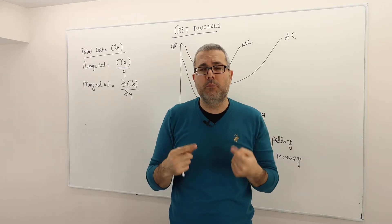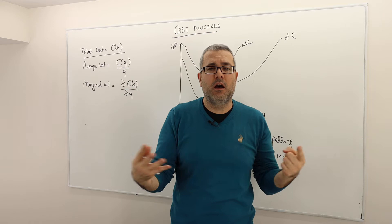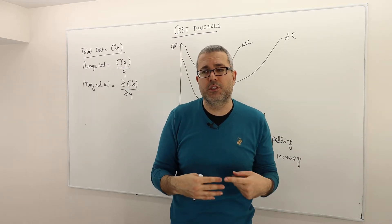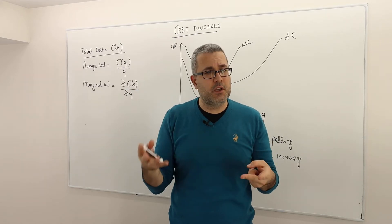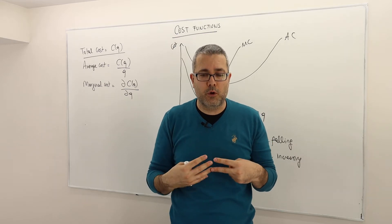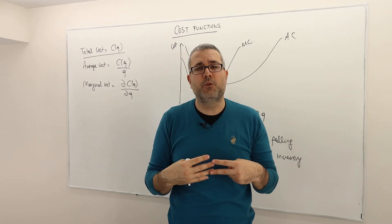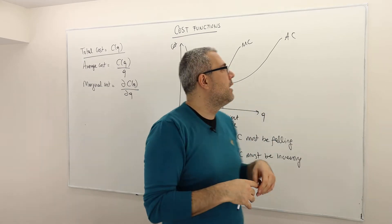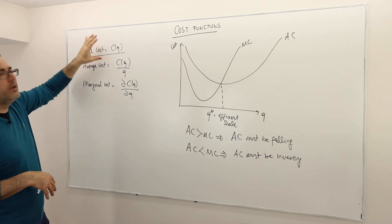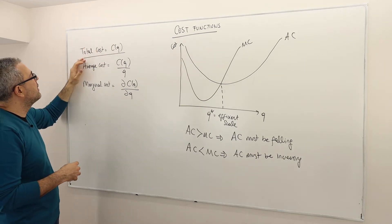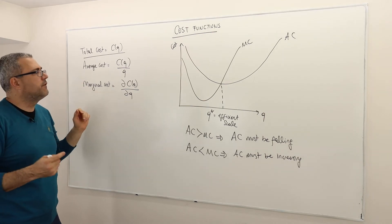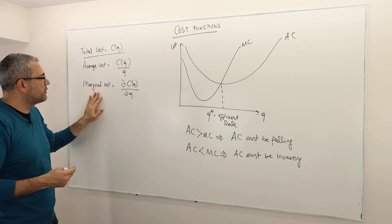One reason is maybe the current technology is worse than the one used for the calculation. Or two, the technology and the input prices may be the same, but the inputs used for producing the output are not selected optimally. So let's suppose we calculated the cost function — we call it total cost, denoted C of Q. There are two concepts we define: average cost versus marginal cost.